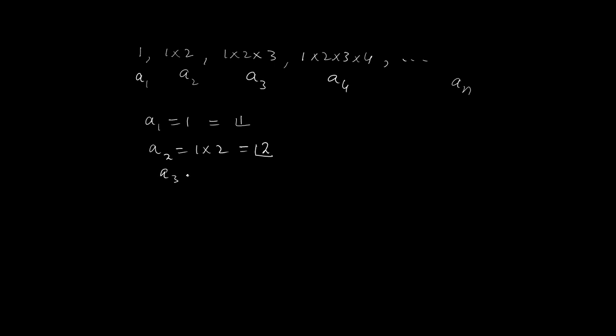The third term is 1 × 2 × 3 which is 3 factorial and the fourth term is 1 × 2 × 3 × 4 and this is 4 factorial.